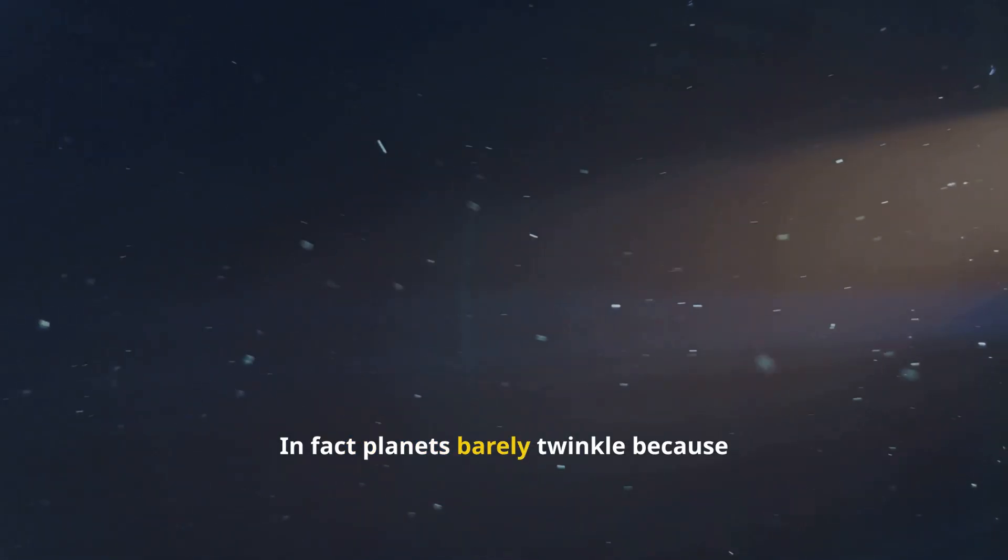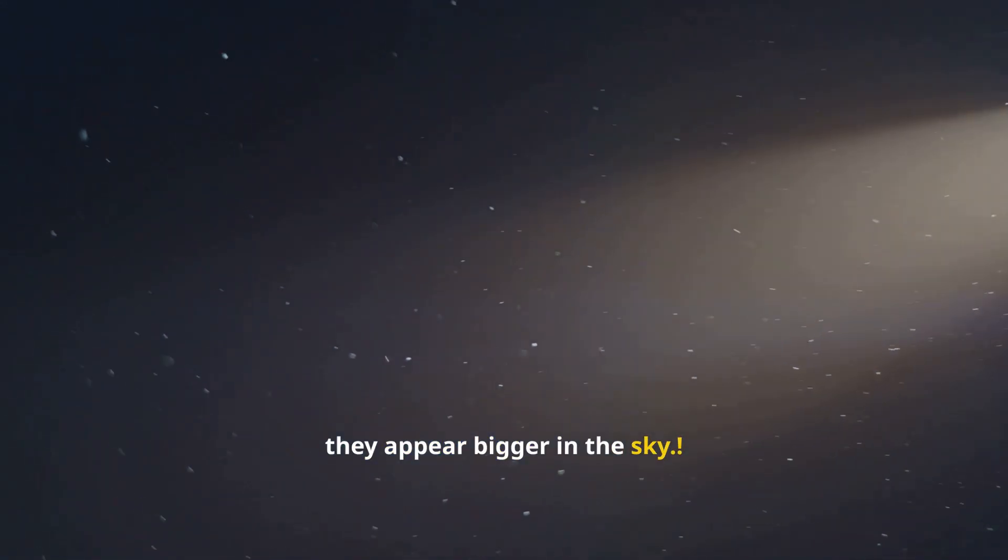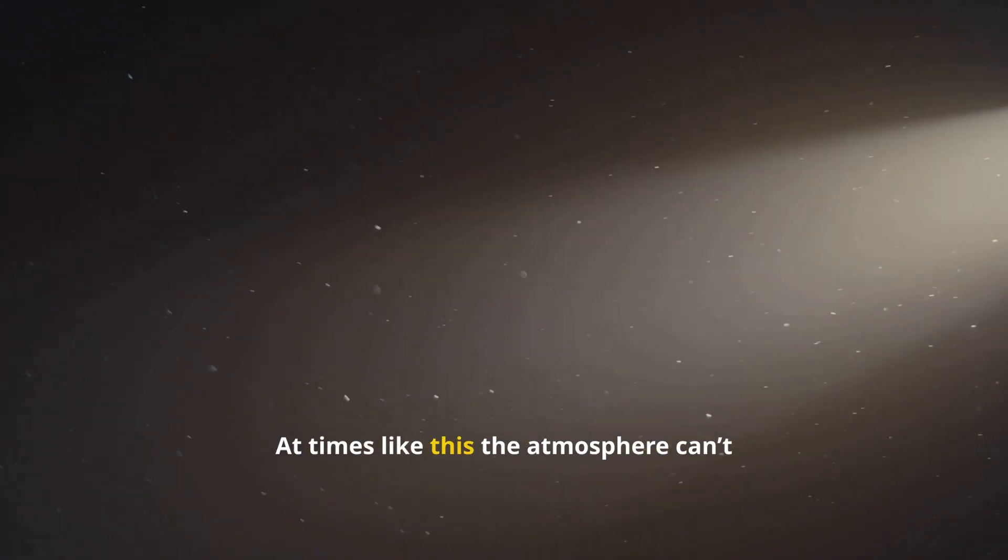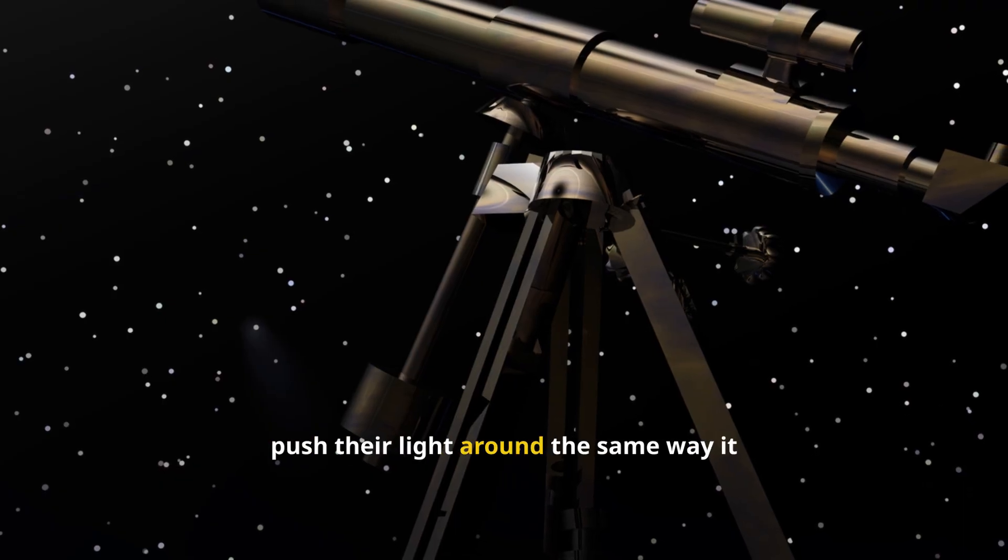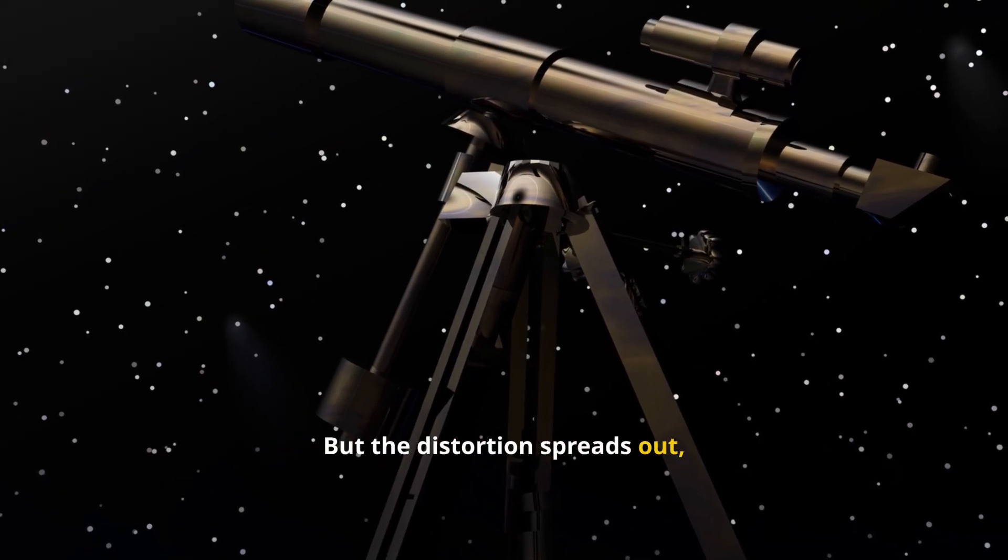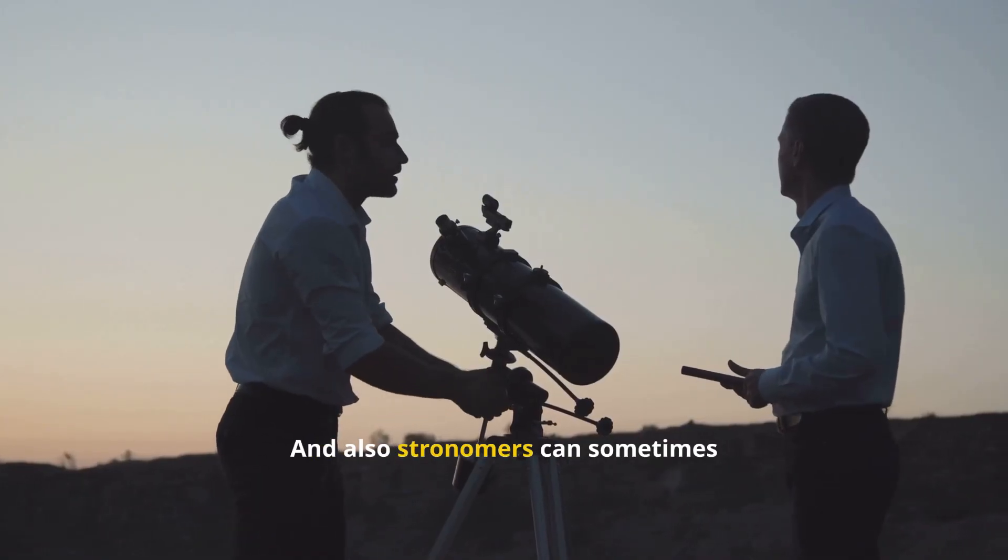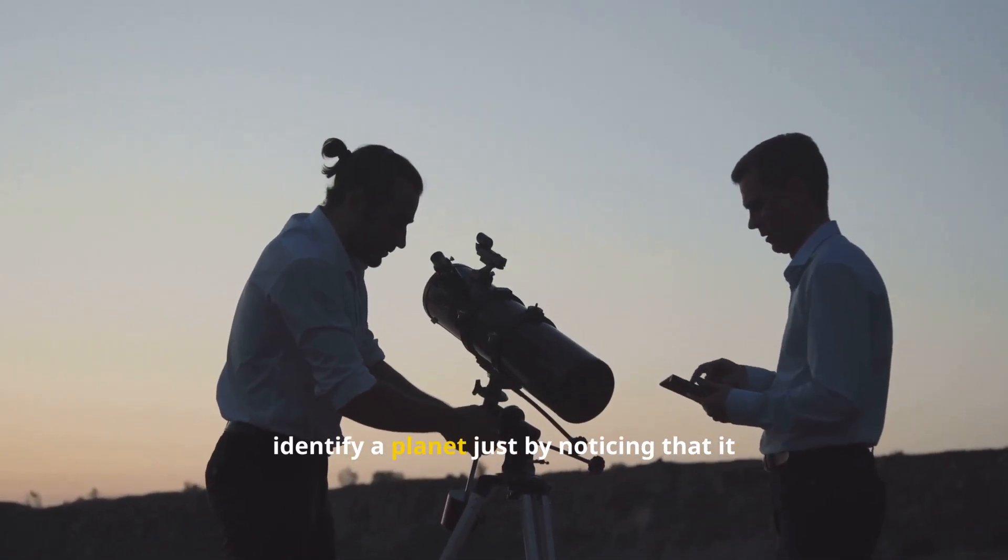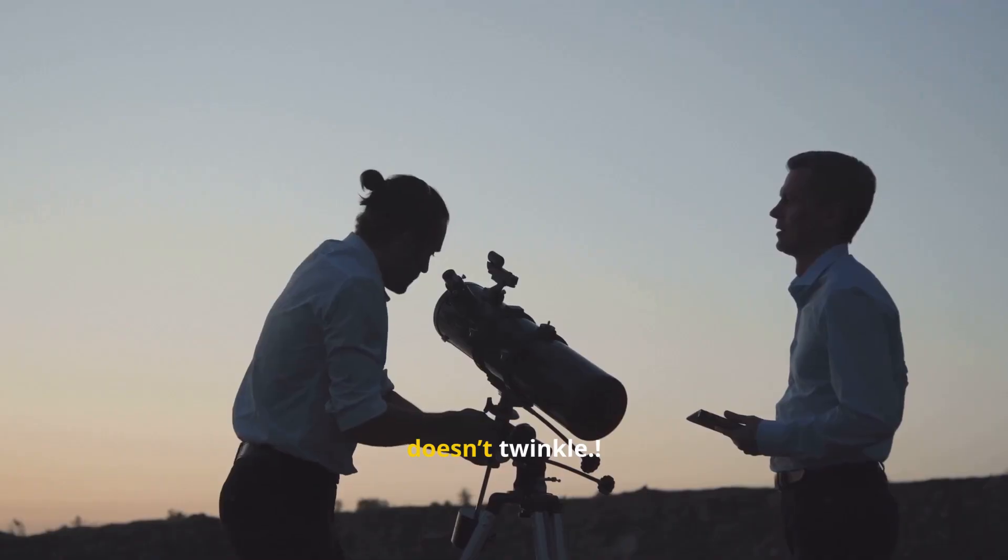In fact, planets barely twinkle because they appear bigger in the sky. The atmosphere can't push their light around the same way it does with stars. The distortion spreads out, so we see a steady glow. Astronomers can sometimes identify a planet just by noticing that it doesn't twinkle.